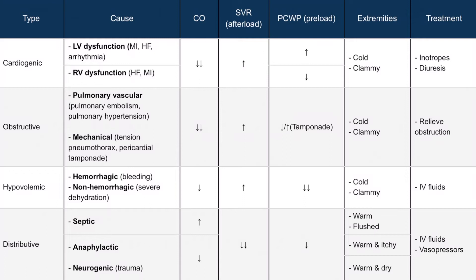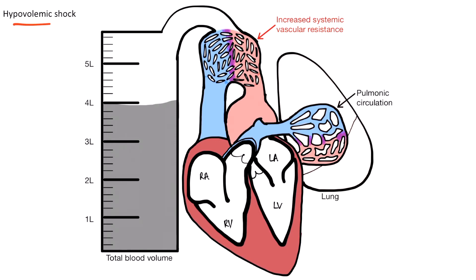The next and most common type of shock we'll discuss is hypovolemic shock. We can divide hypovolemic shock into hemorrhagic and non-hemorrhagic depending on the underlying cause. Hypovolemic shock refers to shock due to reduced intravascular volume — for example, a blood volume of about 4 liters instead of the typical 5 liters represents a loss of 20% of blood volume. Hemorrhagic causes occur due to bleeding; non-hemorrhagic causes are due to fluid loss other than blood, such as in severe dehydration. In both cases, this leads to a decrease in total effective circulating blood volume, which means there's less filling of the heart, which decreases cardiac output.